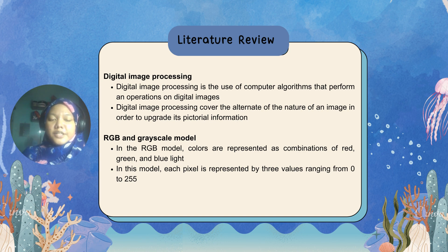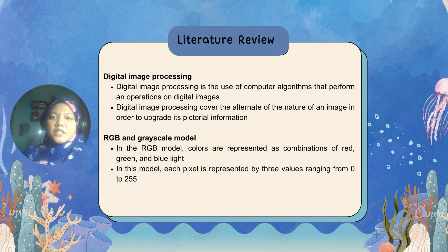Secondly, the RGB and grayscale model. In the RGB model, colors are represented as a combination of red, green, and blue. This model is commonly used for displays such as computer monitors and televisions. In the RGB model, each color is represented by three values ranging from 0 to 255 that specify the intensity of each color component. By combining these three components in varying proportions, a wide range of colors can be produced.